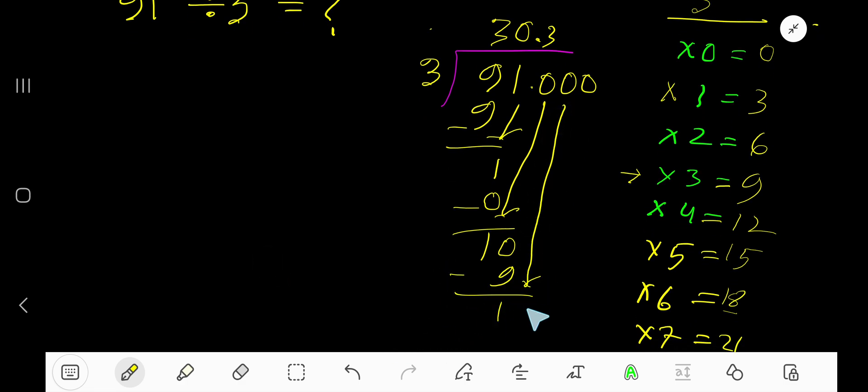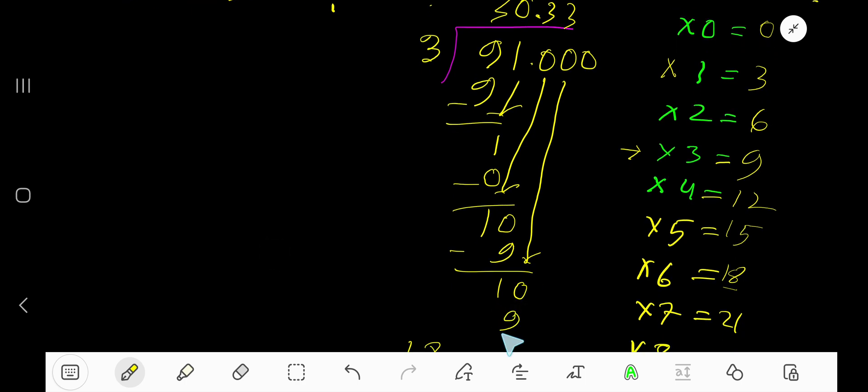Bring down the next 0. 3 goes into 10, again 3 times. 3 times 3 is 9. Subtract 1.